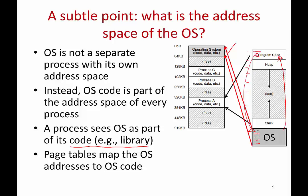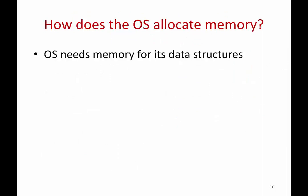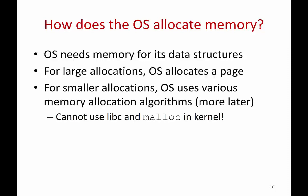How does the operating system allocate memory for its own data structures — such as the list of PCBs and other structures? For large allocations, the OS gives itself a free page. For smaller allocations, the operating system uses various memory allocation algorithms we will study later. Note that the operating system cannot use the C library and malloc in the kernel — that is not available to the OS. The C library is only available to user programs. Within the kernel, you have to implement your own functionality to allocate memory. We will study some of these algorithms a little later.